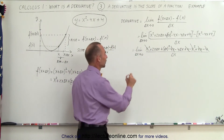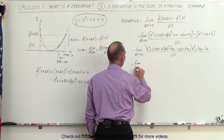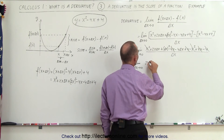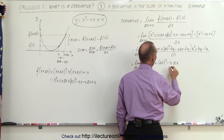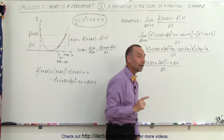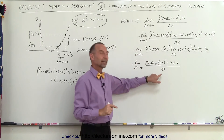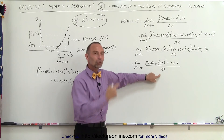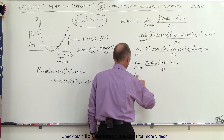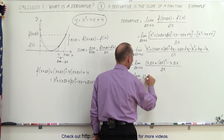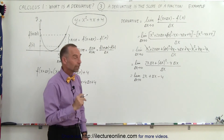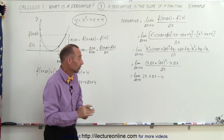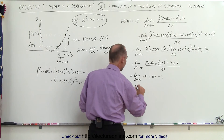Now let's see what we have left over. The derivative equals the limit as delta x goes to zero of 2x times delta x plus delta x squared minus 4 delta x, all divided by delta x. There is a delta x in each term of the numerator and in the denominator, so we can divide through. When we do that, we get the limit as delta x goes to zero of 2x plus delta x minus 4. Now we can allow delta x to go to zero, and this becomes equal to 2x minus 4.